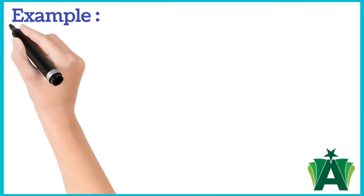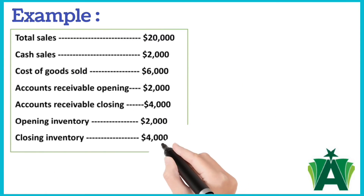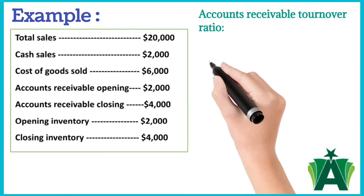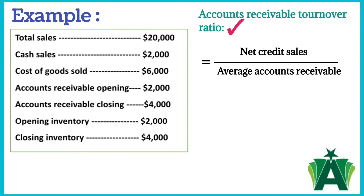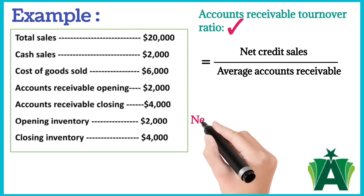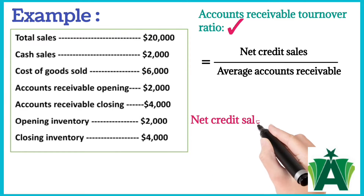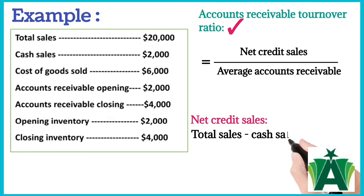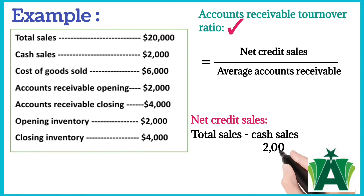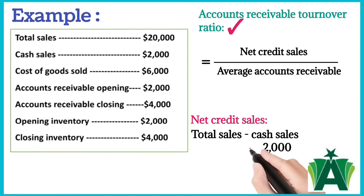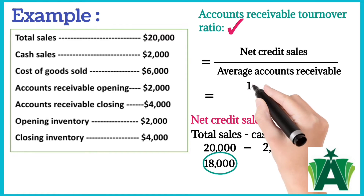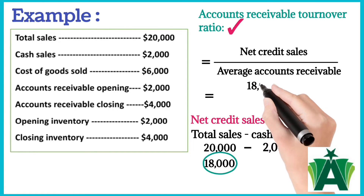From the following information, calculate the Accounts Receivable Turnover Ratio. In this question, net credit sales are not given, so first we will figure out net credit sales by subtracting cash sales of $2,000 from total sales of $20,000. Net credit sales are $18,000.